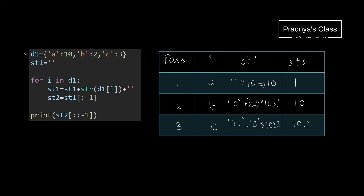Here is one dictionary with some elements. This is an empty string. Using a for loop, we are iterating over the dictionary. By default, we iterate over keys, so 'i' will hold the keys. Let's come inside the for loop — with the dictionary and key, we will be getting the values for that particular key.